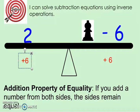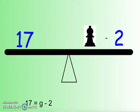How about this problem? 17 is the same as some number minus 2. And this is basically the algebra way of writing it. 17 is equal to a variable minus 2. And what is that missing number?